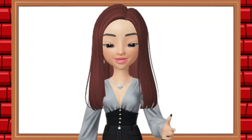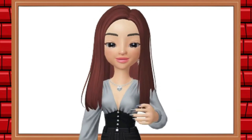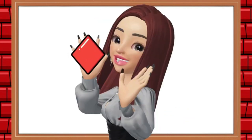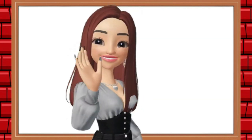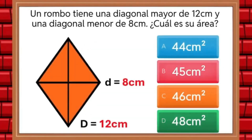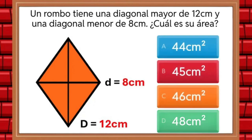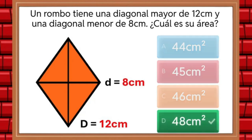All right, young people and children! Let's all play a fun game to reinforce what we have learned in this video. A rhombus has a longer diagonal measuring 12 centimeters and a shorter diagonal measuring 8 centimeters. What is the area of this rhombus? The answer is 48 square centimeters.